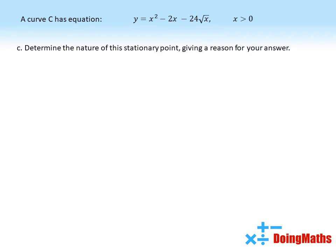Part c asks us to determine the nature of this stationary point and give a reason for our answer. For this, we're going to use our double derivative. So d²y by dx², we've already worked out, is 2 plus 6x to the power of minus 3 over 2.